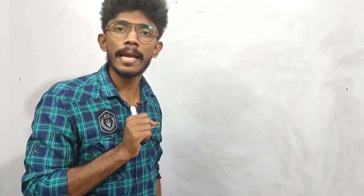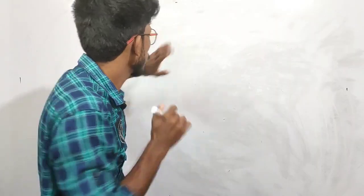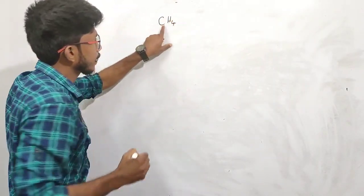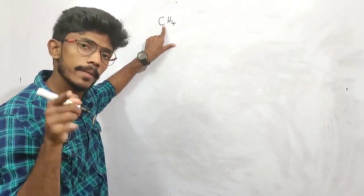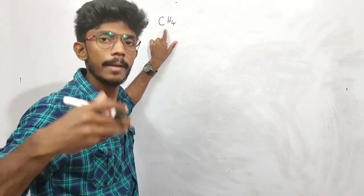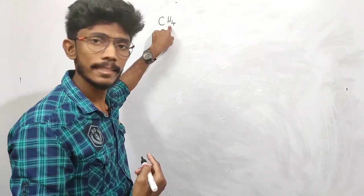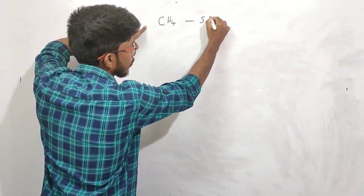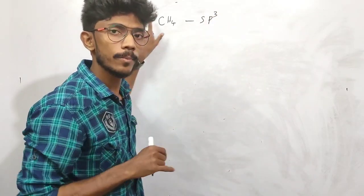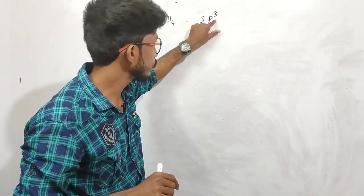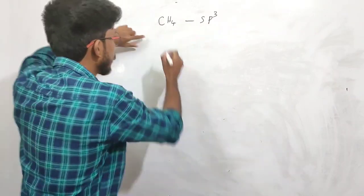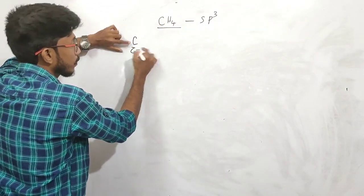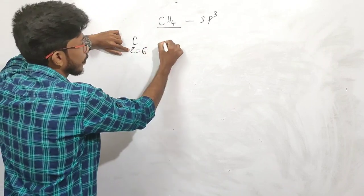Now let's discuss CH4's hybridization. First of all, CH4 — this is the central atom carbon. How much is the hybridization? Our hybridization is SP3: 4 bonds — 3 and 1, total 4. Okay, now let's say this hybridization.